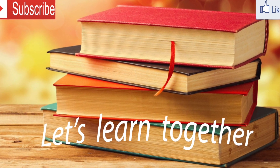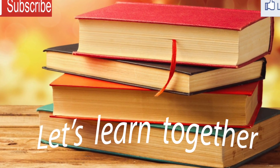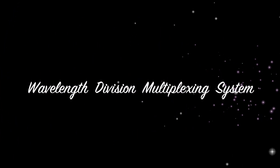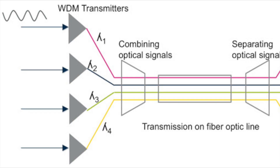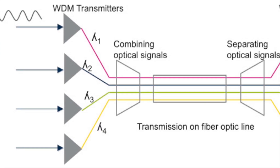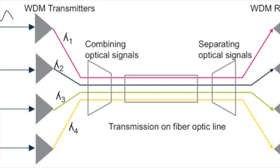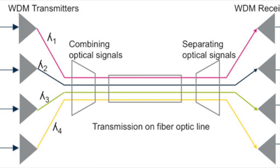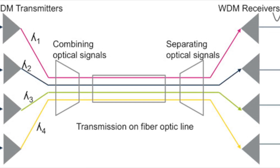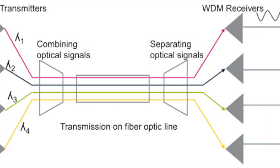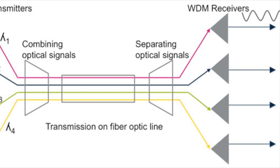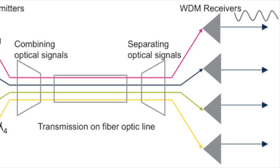Dear friends, in this tutorial we will learn how to design a wavelength division multiplexing system using OptiSystem. In fiber optic communications, Wavelength Division Multiplexing, or WDM, is a technology which multiplexes a number of optical carrier signals onto a single optical fiber by using different wavelengths of laser light. This technique enables us to get a high bitrate and efficient use of fiber bandwidth.